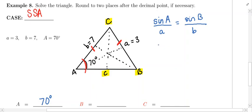Let's pop into this. This is going to tell me that the sine of angle A, which is 70 degrees, over side length a, which is 3, has to equal the sine of angle B, whatever that is, over side length b, which is 7. This leaves us with one unknown. We can solve for angle B.